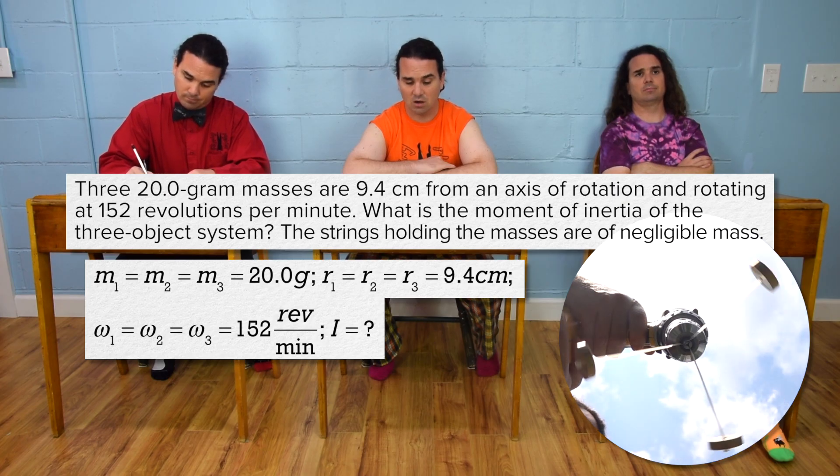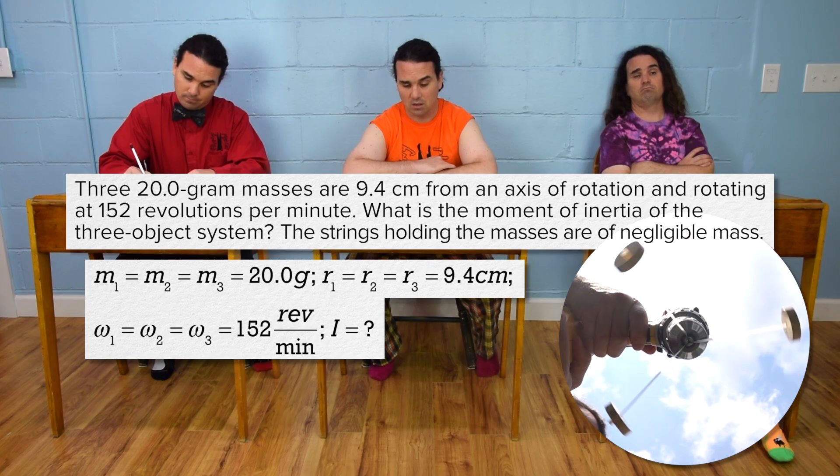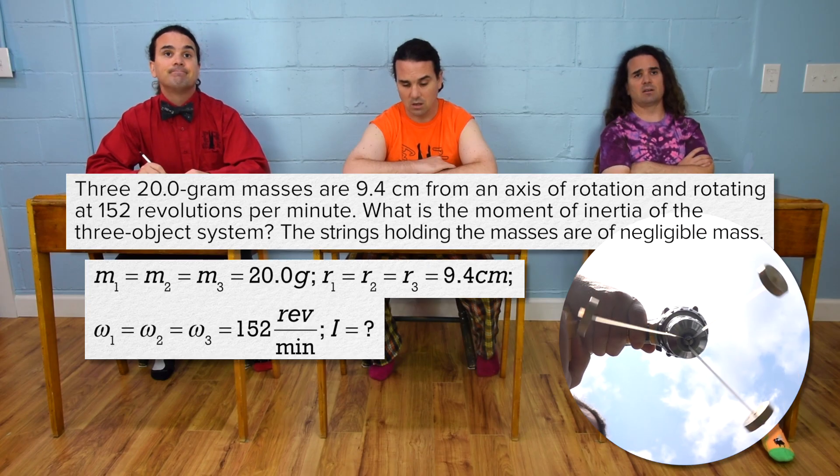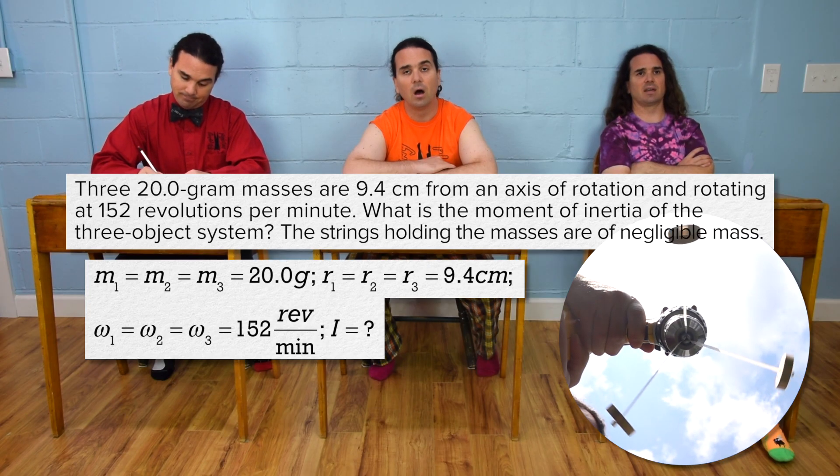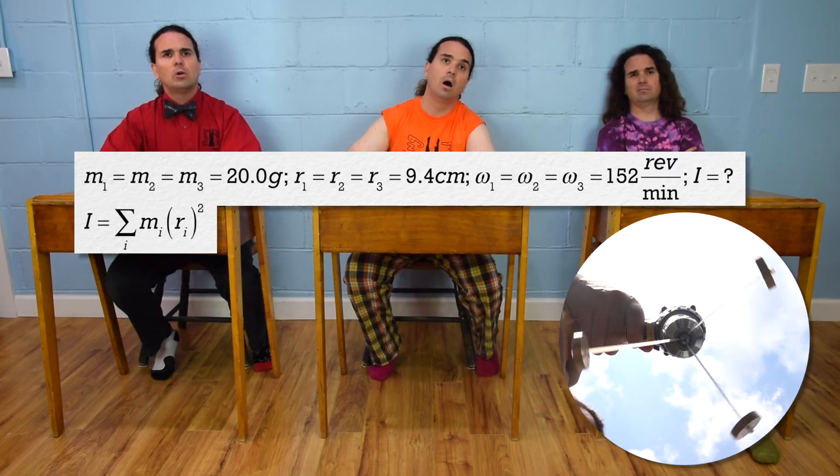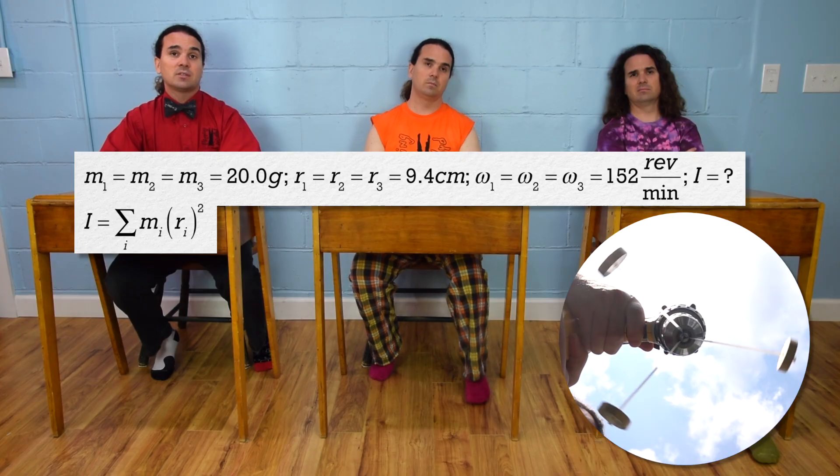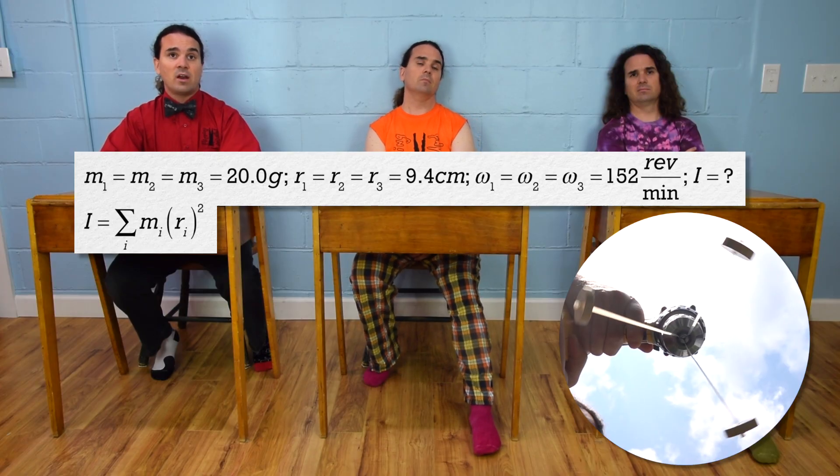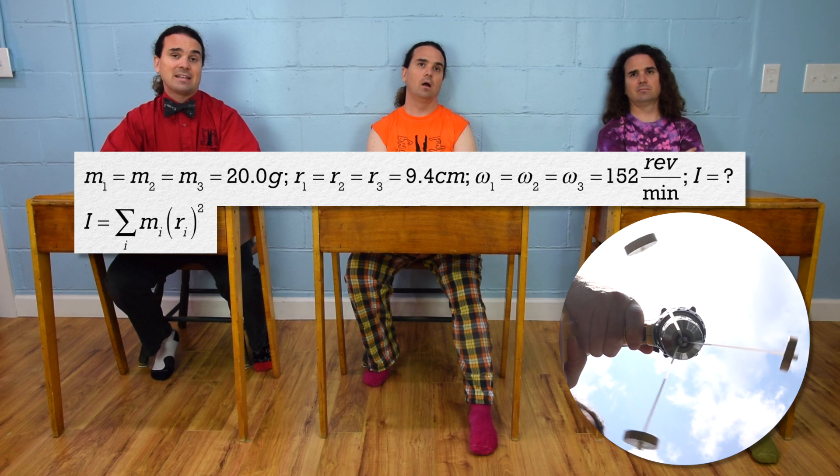The strings holding the masses are of negligible mass. The strings do not matter, but I don't think we need to write anything down for that. Billy, please solve the problem. Moment of inertia capital I equals the sum of all the mass times square of the distance from the axis of rotation expressions, one for each of the masses.